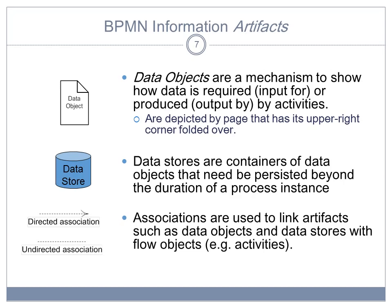As opposed to the data object, the data object is part of the process. When the process is over, this data object disappears as well. And then you connect those data objects and data stores using associations, which can either be directed or undirected. The directed are typically used to show the input and the output.